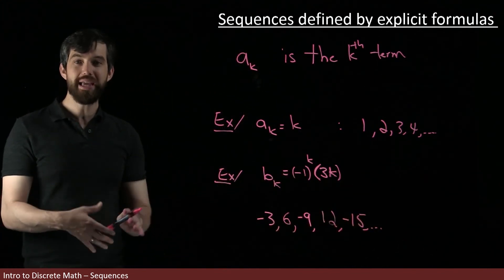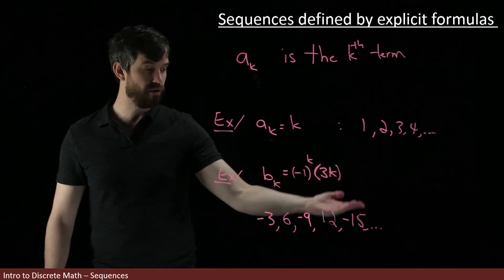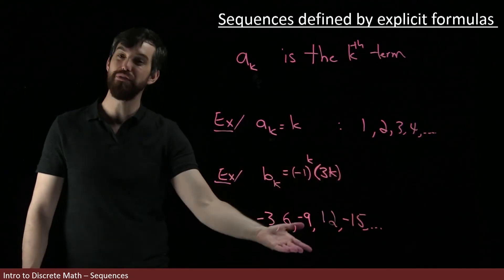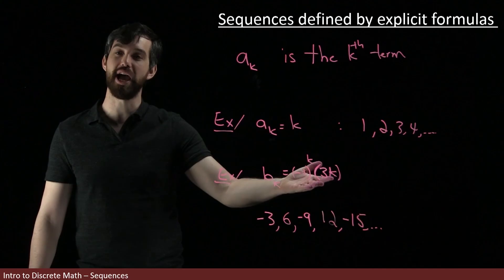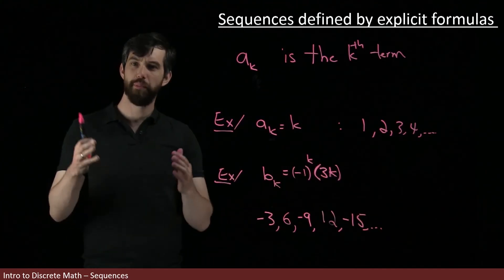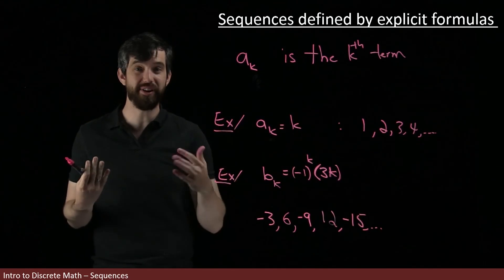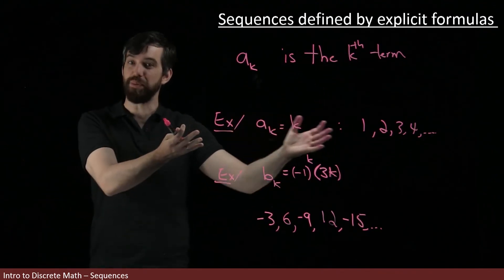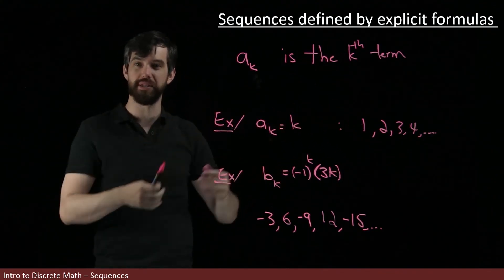So this problem can work two different ways. I can either give you the formula and you can write down the first few terms, or I can give you the first few terms and you can write down what the formula's going to be. By the way, every sequence doesn't necessarily have a nice, explicit, closed-form formula, as they say.